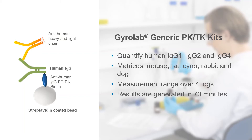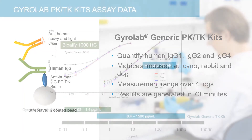Very low serum sample volume requirements of 8 microliters means a complete PK analysis can be done using serial sampling from one animal, including small rodents.